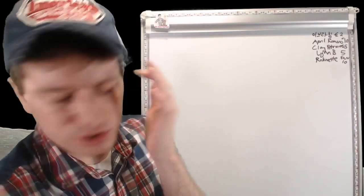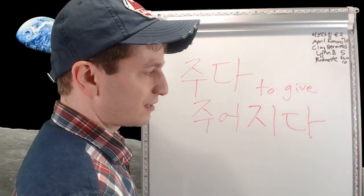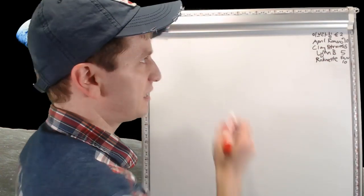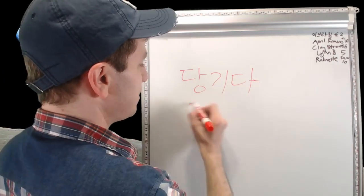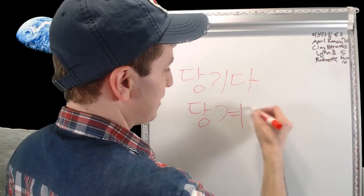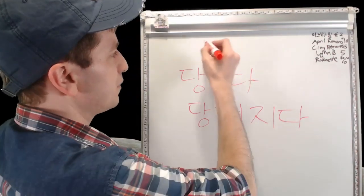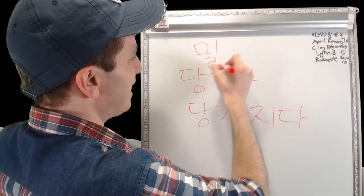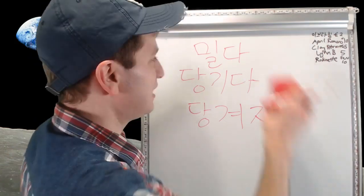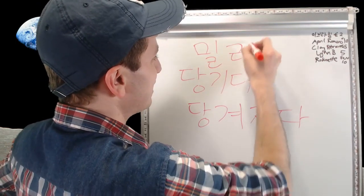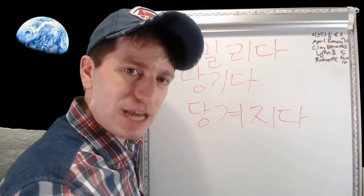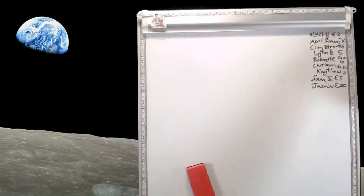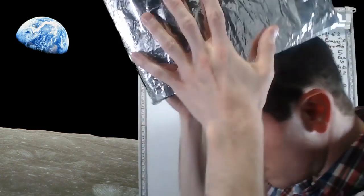However, not every verb becomes passive with 지다. For instance, 밀다 (to push) does not become 밀어지다 — it becomes 밀리다. So you can't just attach 지다 and assume it will work. Some verbs already have their own passive form. And with that, see you guys next time. 그럼 다음에 또 봐.